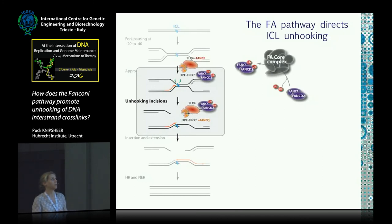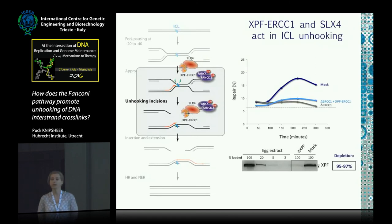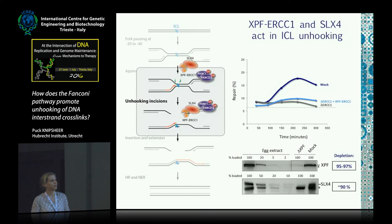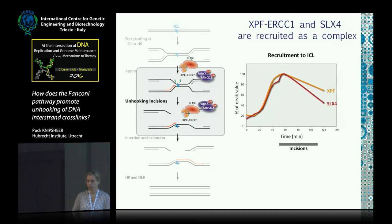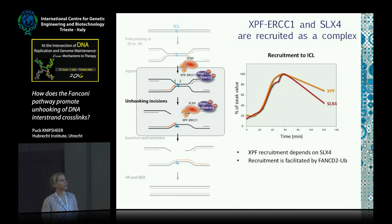The way we showed that XPF ERCC1 performs these incisions is by immunodepleting XPF from our extract, which completely blocked ICL repair. However, when we added back recombinant XPF ERCC1, we could not rescue the repair defect. We then found out that depleting XPF actually leads to co-depletion of the scaffolding factor SLX4, and finally we managed to rescue the repair defect by adding not only XPF ERCC1, but also SLX4. The fact that SLX4 is almost completely co-depleted with XPF means that in extract it's most likely always in a complex, and recruitment of XPF fully depends on the presence of SLX4. This recruitment of the incision complex is also facilitated by ubiquitylation of FANCD2.